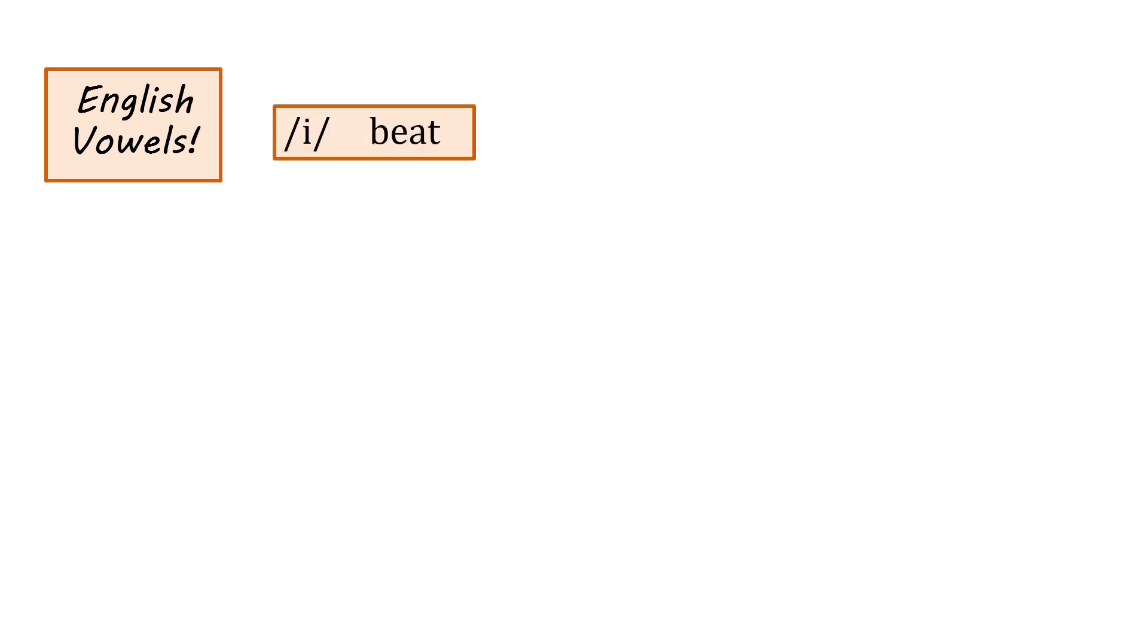i as in beat. ɪ as in bit. e as in bait. And in some dialects this is actually a diphthong which we will talk about in the next couple of slides. So just be wary that this might actually be a diphthong that is eɪ rather than e. ɛ as in bet.